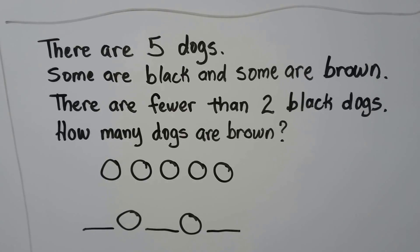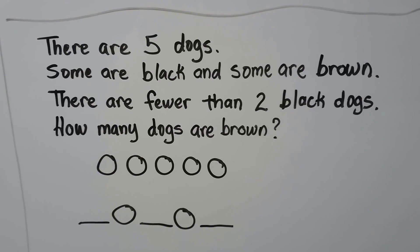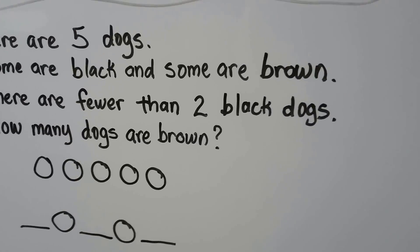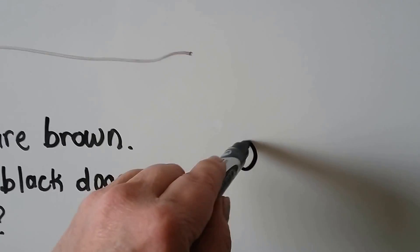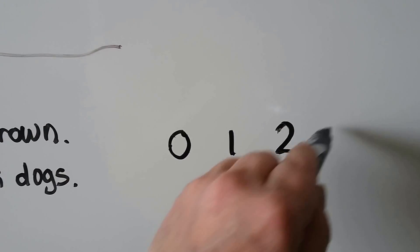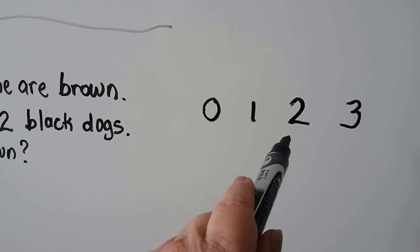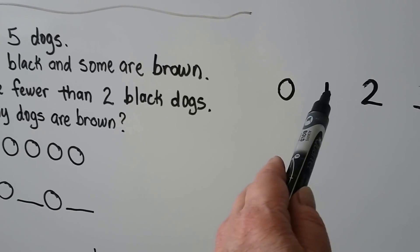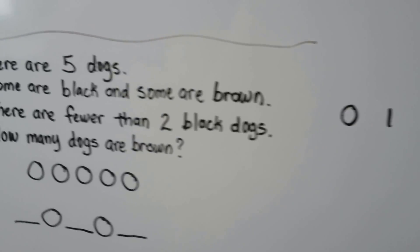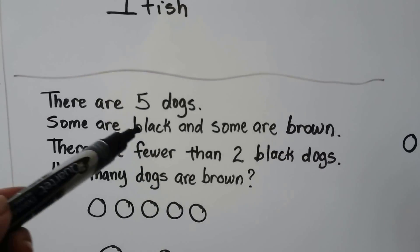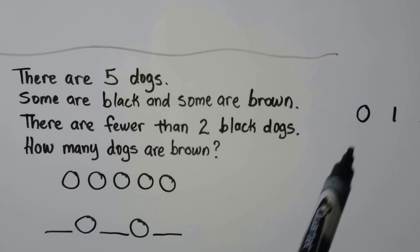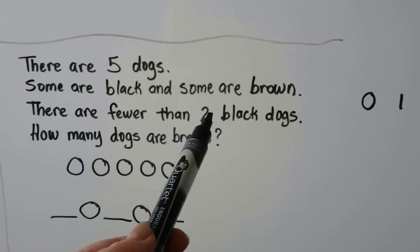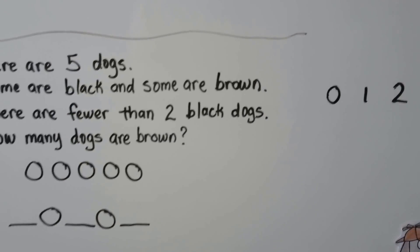What number is fewer than two? Fewer means less than. What numbers are smaller — fewer than two? When we count, we've got zero, one, two, three — but it says fewer than two, so it can't be two. That means it's got to be a one or a zero. But it said there are some black and some brown, so it can't be zero, so it must be one. There must be one black dog.